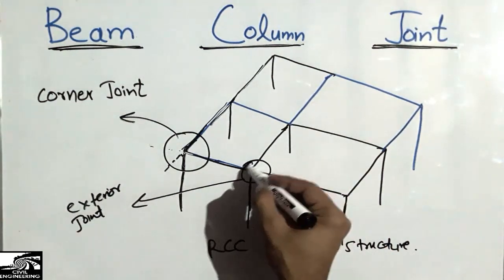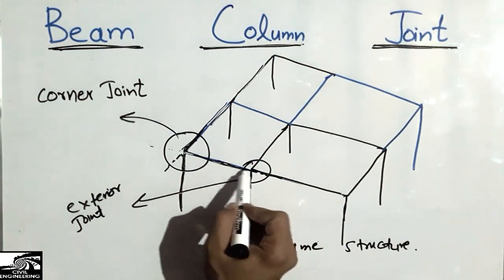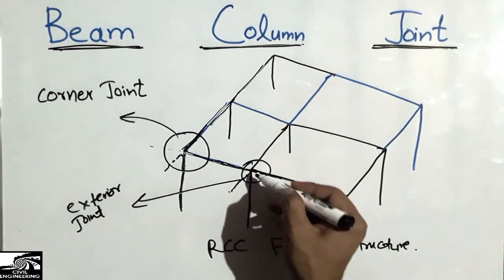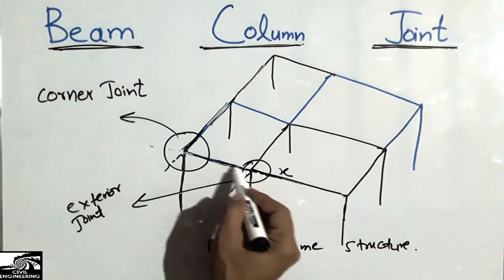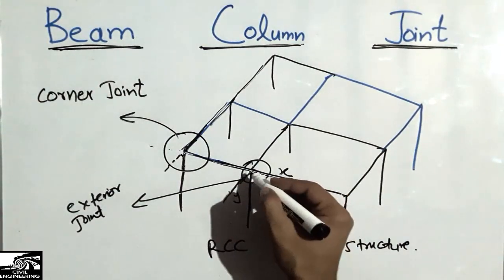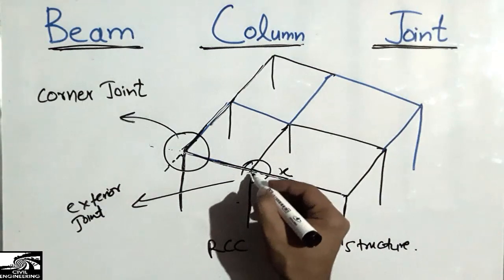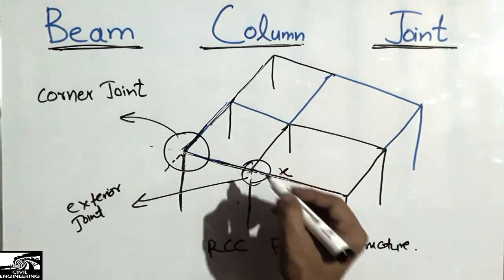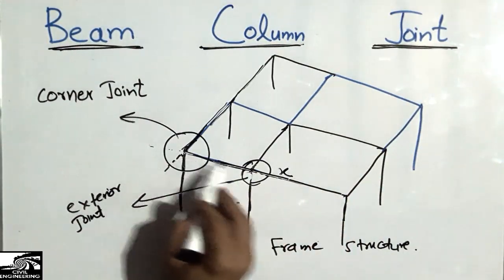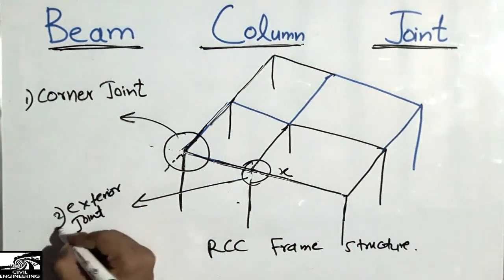The exterior joint is one in which the beam can extend in one direction but cannot extend in the other direction, because it stops at the column location. For example, it can move in the X direction but not in the Y direction. We call this the exterior joint because one beam stops at the column while the other beam continues through.